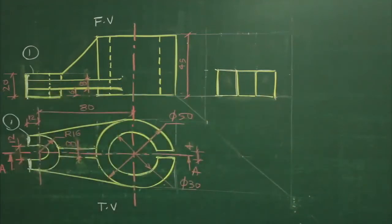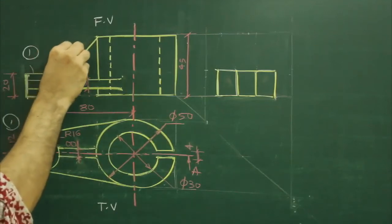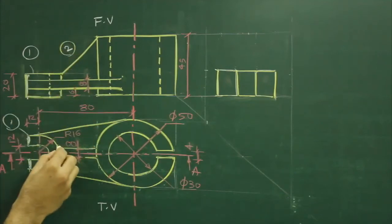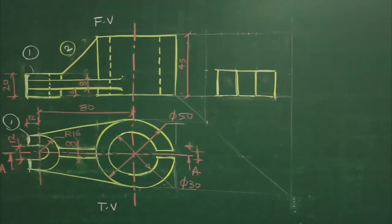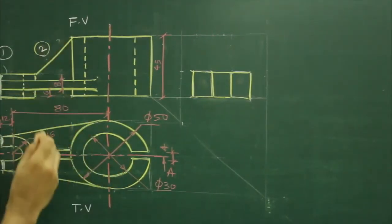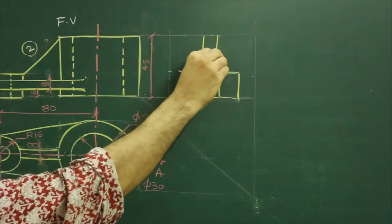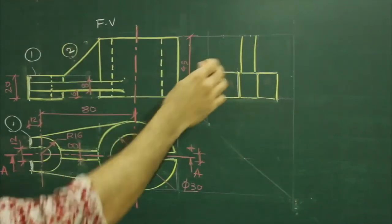So we are done with the first part. Now after this, you will see the slope — part two. If you see the slope, it is inclined in the front view and in the top view it is a rectangle, so in the side view you have a rectangle. When you project this part, it will be like this — projecting from here and from here, you will get that part.